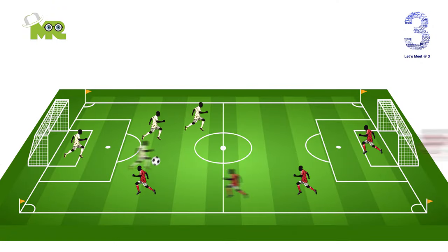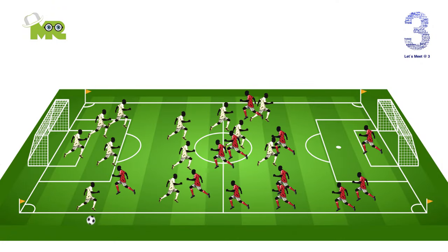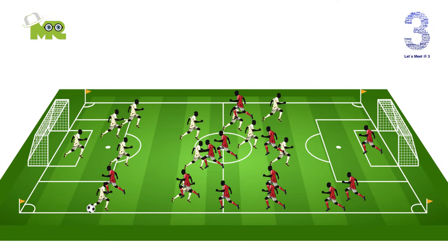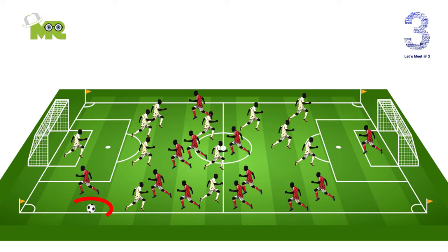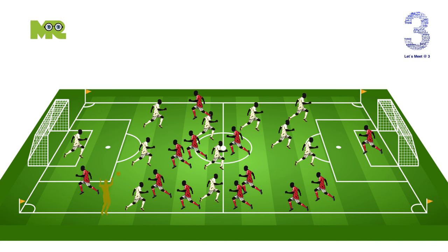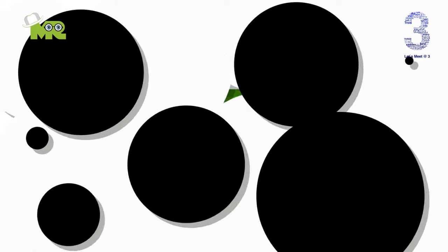When the soccer ball has gone out of bounds, the team that last touched the ball loses possession and the opposing team gets to throw in the ball from the point where the ball crossed out of bounds. When throwing the ball in at a throw-in, the ball must be thrown from behind and over the head using both hands. When the ball leaves the thrower's hands, both of his or her feet must be touching the ground.